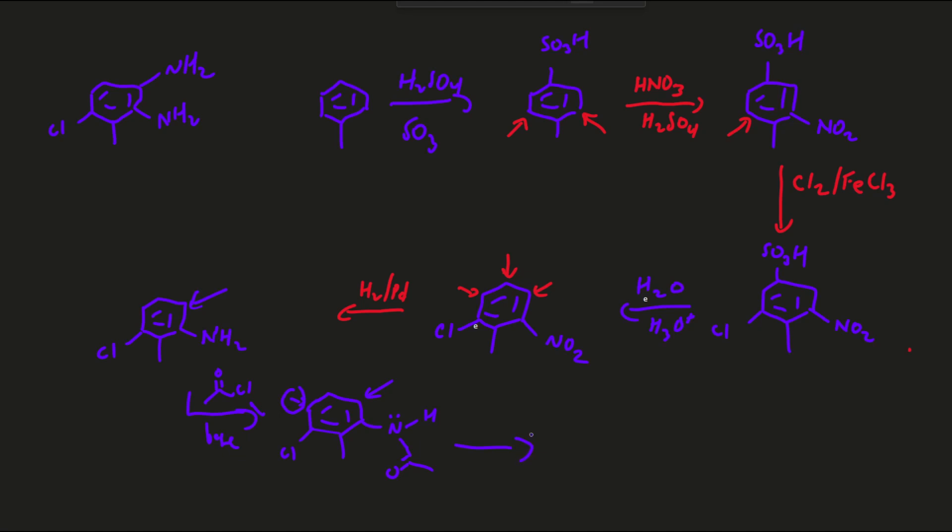It's going to withdraw electron density inductively from that spot. So, we can kind of bet against that one. It's probably not going to be 100 to 0. But, it would definitely be very favorable to go to the other spot. So, if I do that, nitric and sulfuric, then I'm going to get at least the majority of my other nitrogen where I want it.